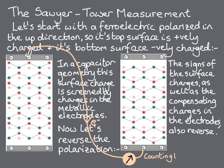As the electrons flow from one electrode to another, they are counted, and the number of electrons that flow per unit area of the ferroelectric surface gives us a measure of the polarisation.